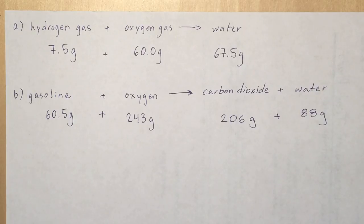So if you add those two up, there's a 10 gram difference between them. So that is not consistent. B is not consistent with the law of conservation of mass.